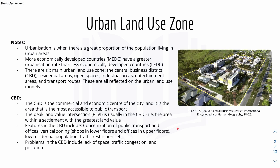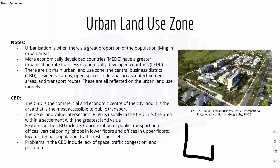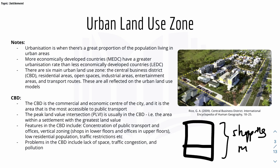Features in the CBD include a concentration of public transport and offices, and vertical zoning — where a building is split by use, for example the bottom floor is shops and the top floors are offices. This is quite common in shopping malls where the bottom floor is for shopping and the top floor is offices.